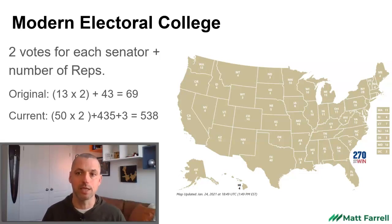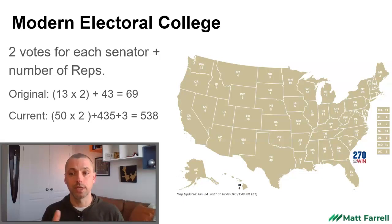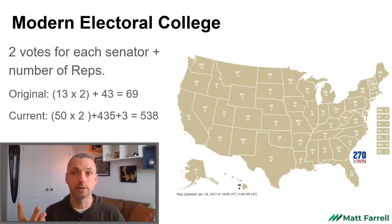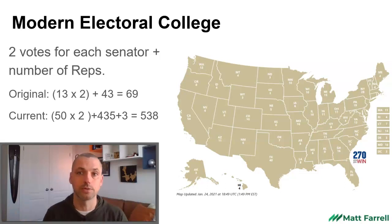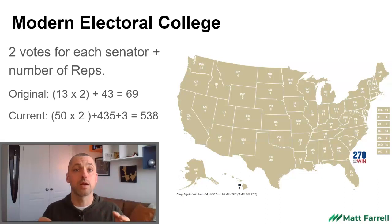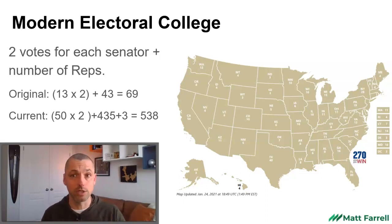That's where the Electoral College is today. Three is the minimum, so if you're a state like Wyoming or South Dakota, you'll get two Electoral College votes for your senators and one for your congressman. California gets the same formula: two senators plus your House of Representatives congressional delegation. That's where the math comes from — 538 Electoral College votes. In order to win, you need to be the candidate that gets 270 Electoral College votes.